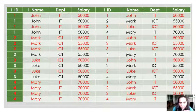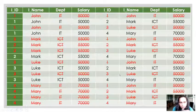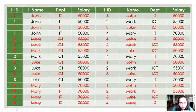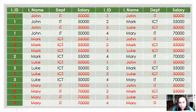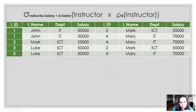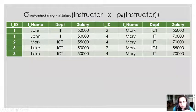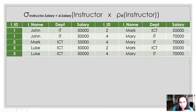After removing those rows, what you have left is John twice, Mark, and Luke twice on one side, and Mark twice and Mary three times on the other. This is your final result. The query was sigma instructor.salary less than D.salary, then instructor cross rho-D of instructor. If you check the salaries on the left side, they are all less than the salaries on the right side: 50, 55; 50, 70; 55, 70; 50, 55; and 50, 70. So this is the correct result.